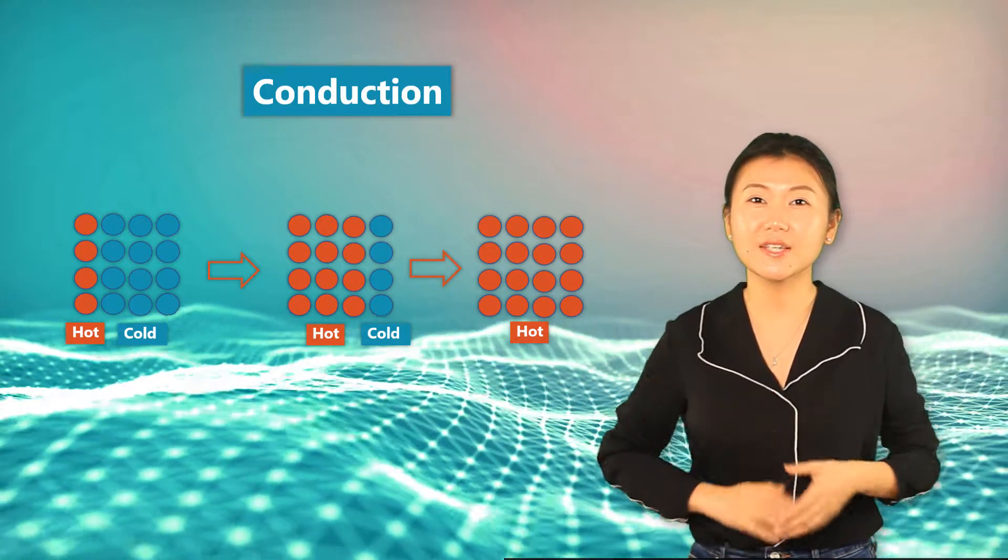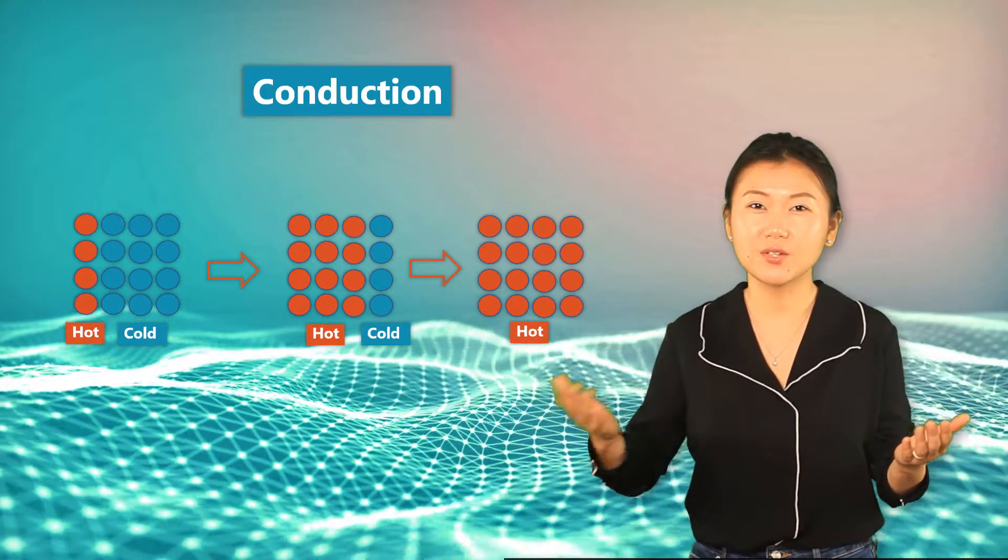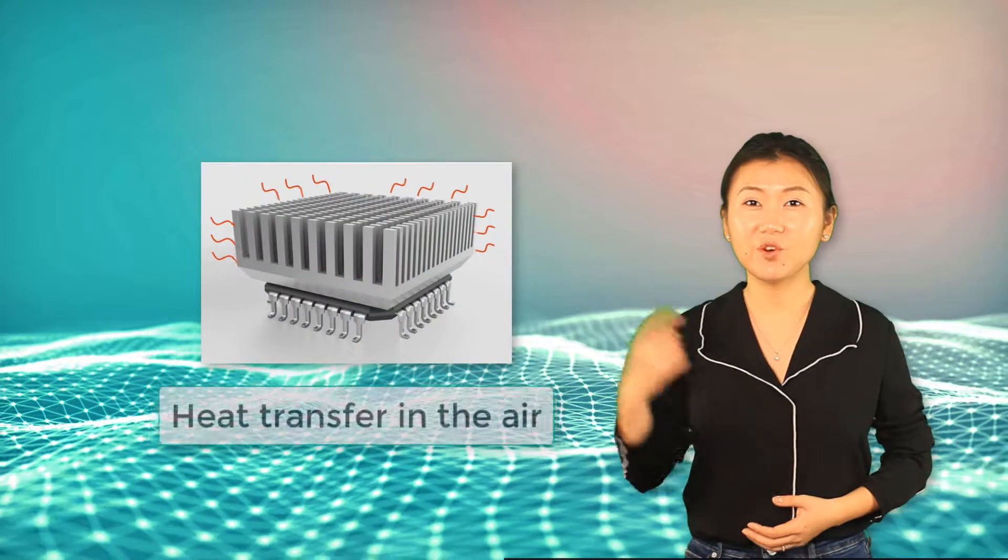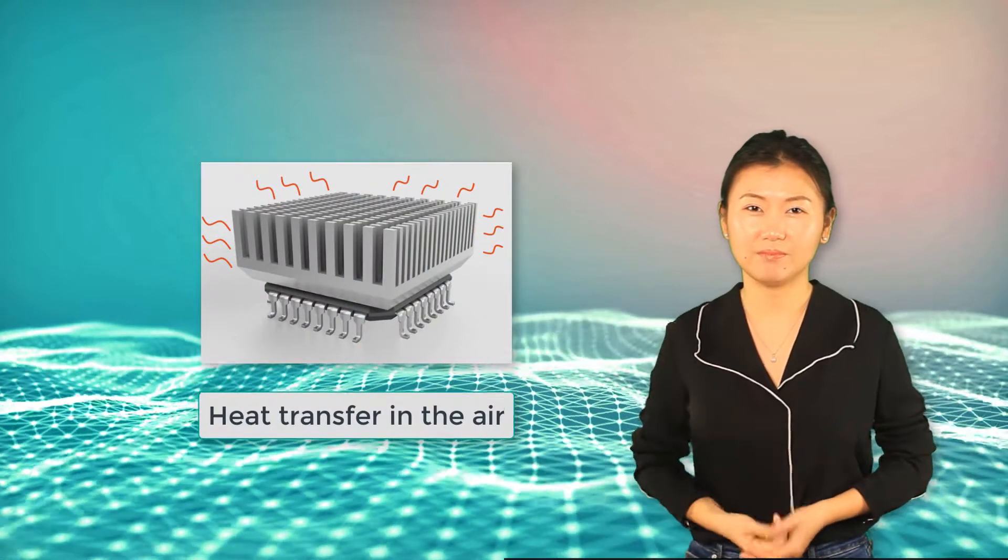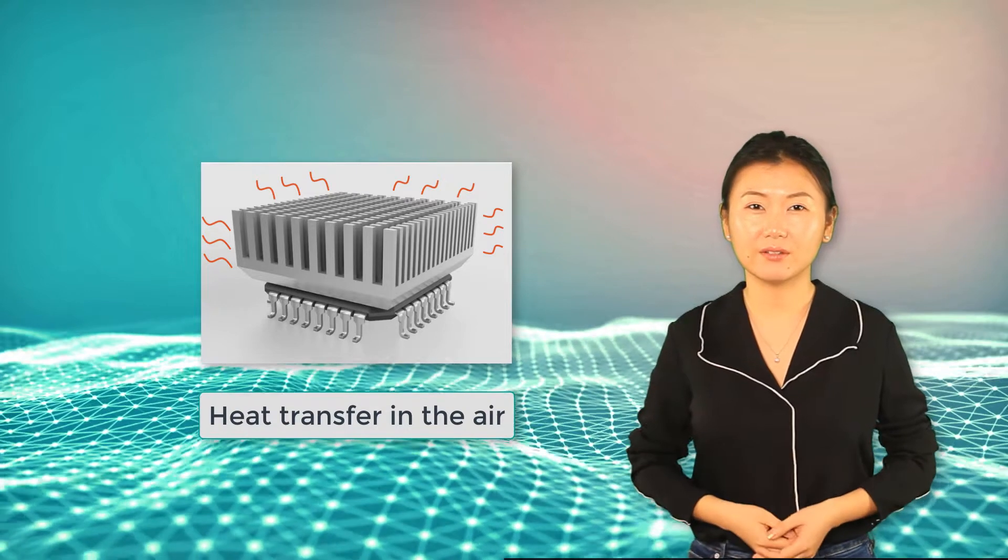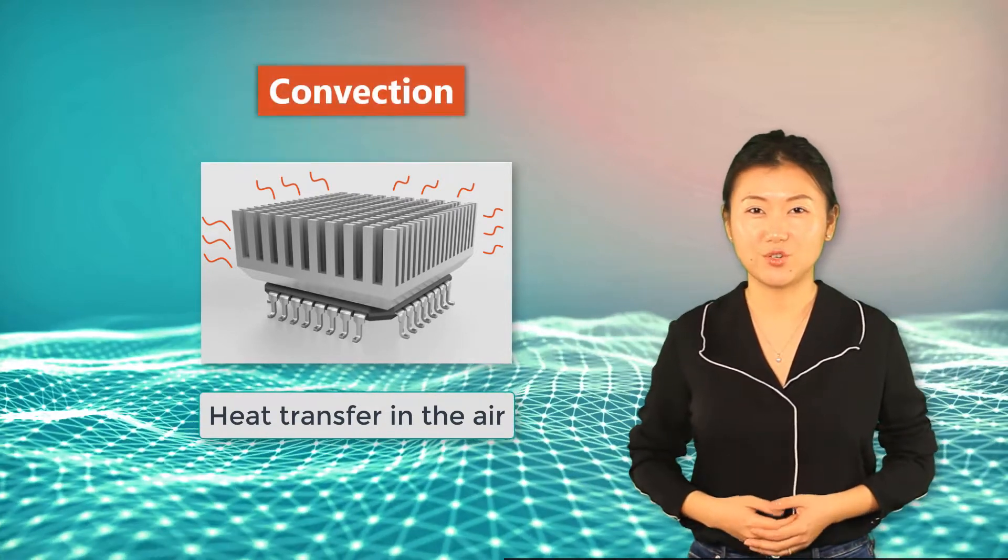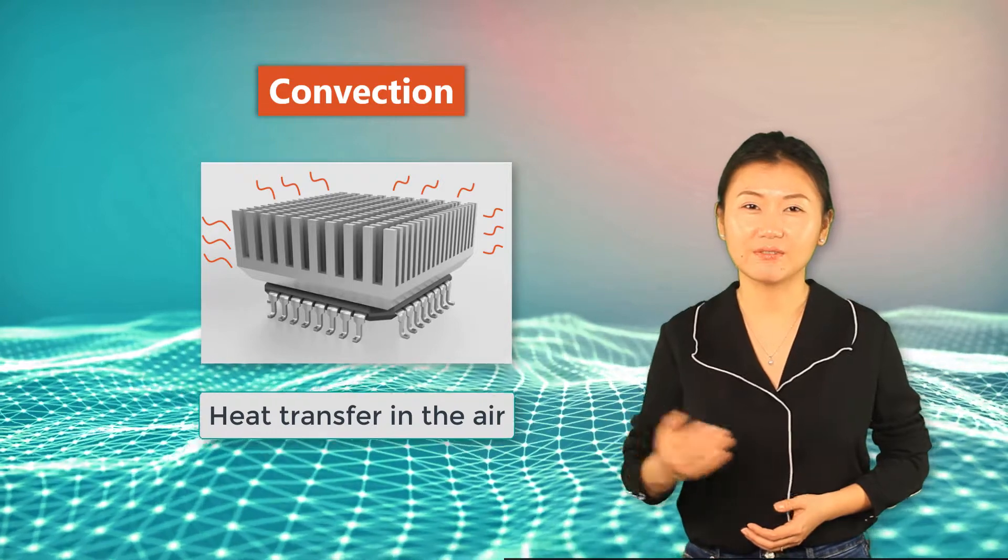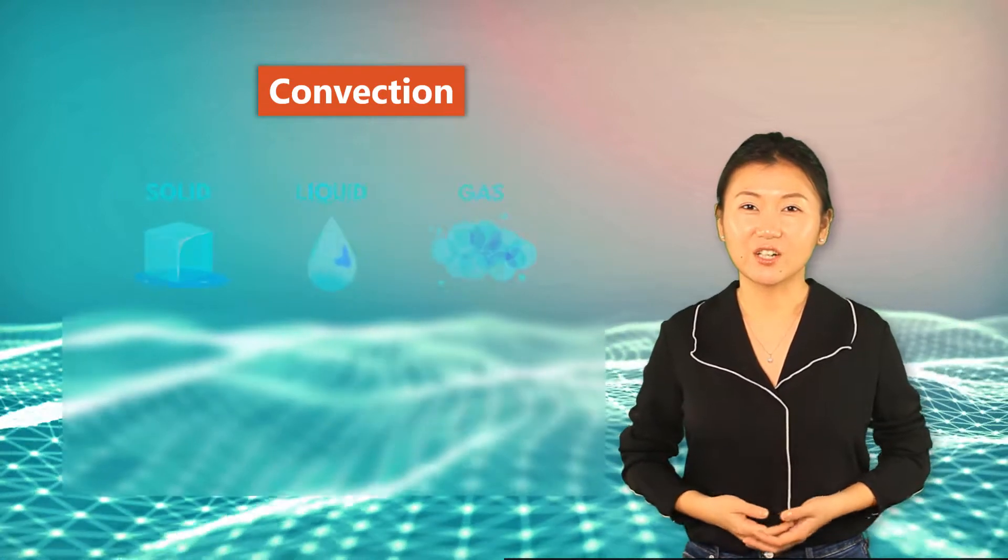The problem we want to look into in this lesson is what is happening for the air around such a system. How does heat get transferred from the heat sink to the air? This leads to another mode of heat transfer: convection. Convection occurs in fluids such as liquids and gases.